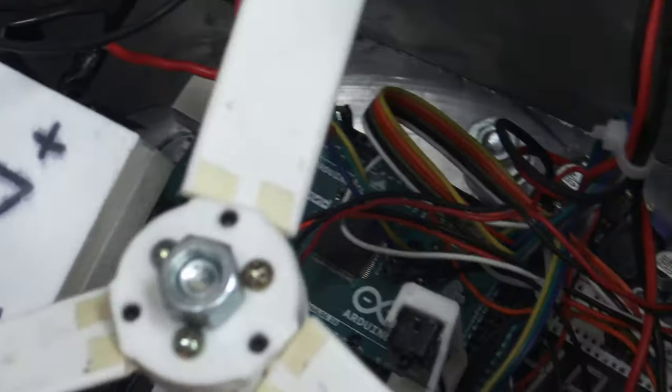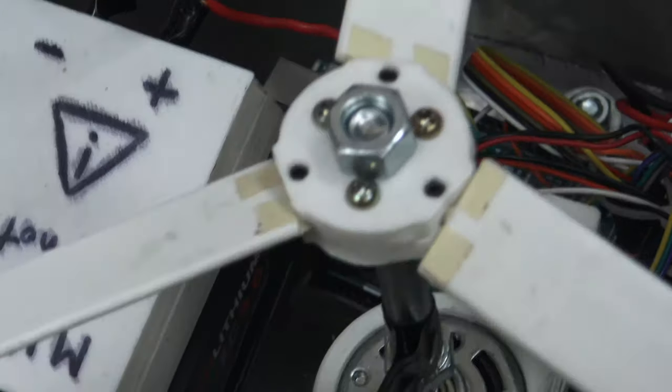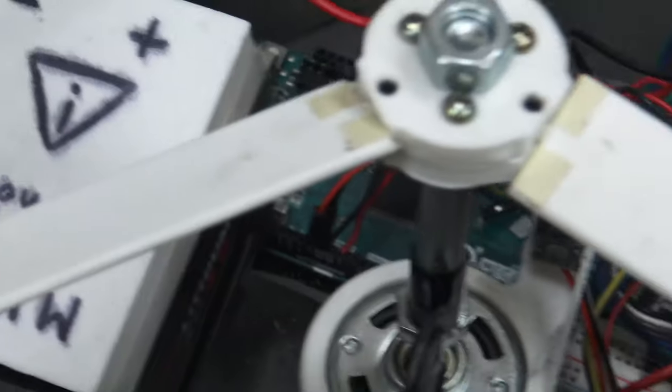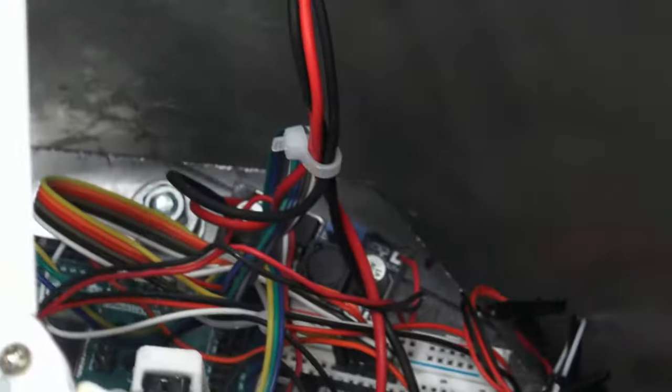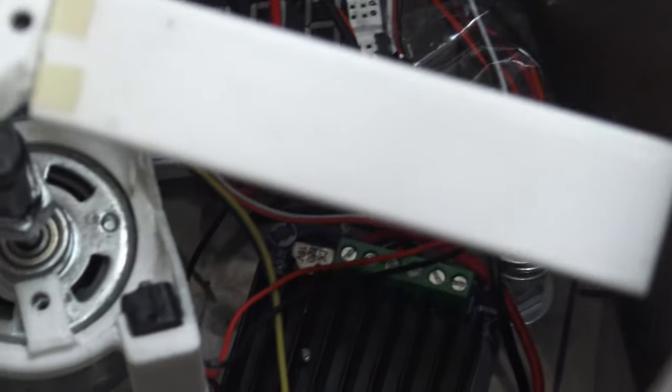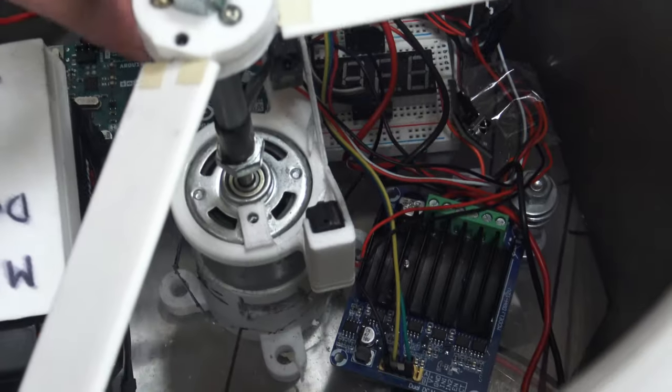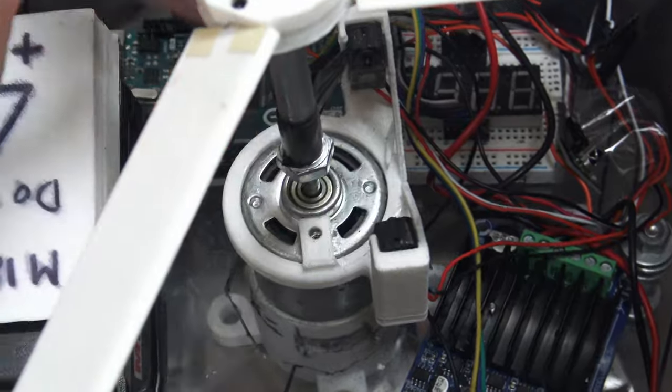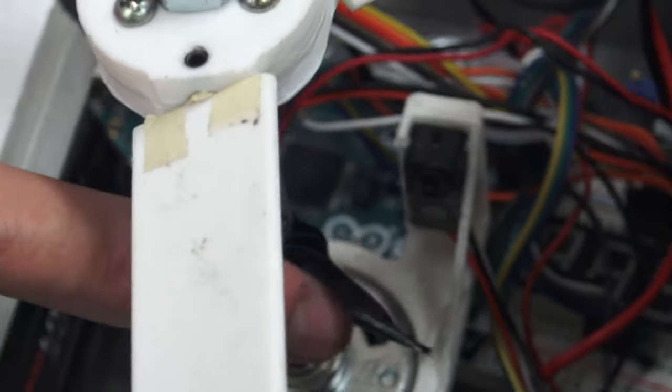It will send out a PWM signal to control the speed of the motor through this motor controller. This is some generic motor controller that I don't know the part number of. And then also it uses the same technology as our bead dynamics, so it uses these brake beam sensors here, IR emitter receiver pair.